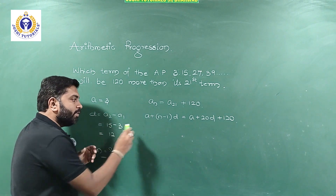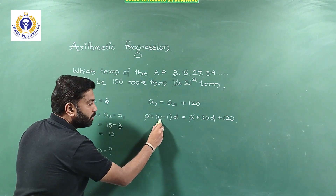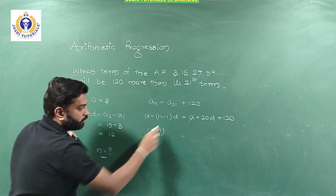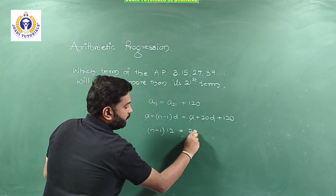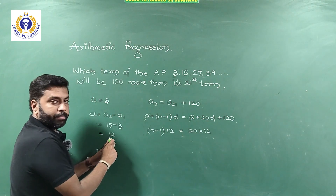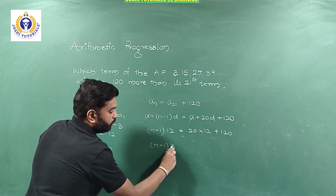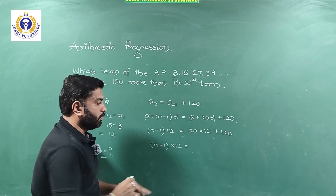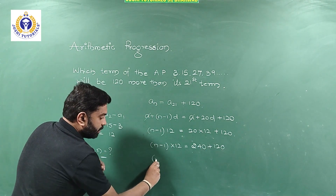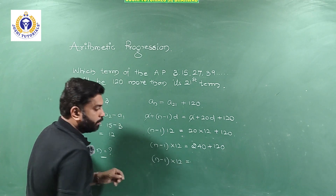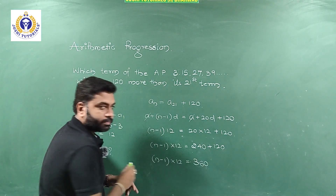We can cancel the 'a' terms on both sides since they appear on either side of the equation. So (n−1)d = 20d + 120. Substituting d = 12: (n−1)×12 = 20×12 + 120, which gives (n−1)×12 = 240 + 120 = 360.